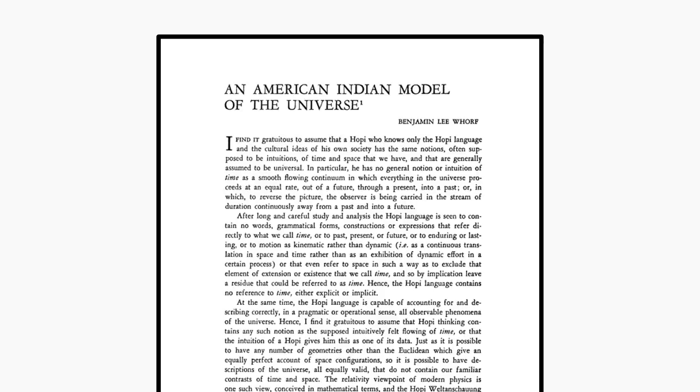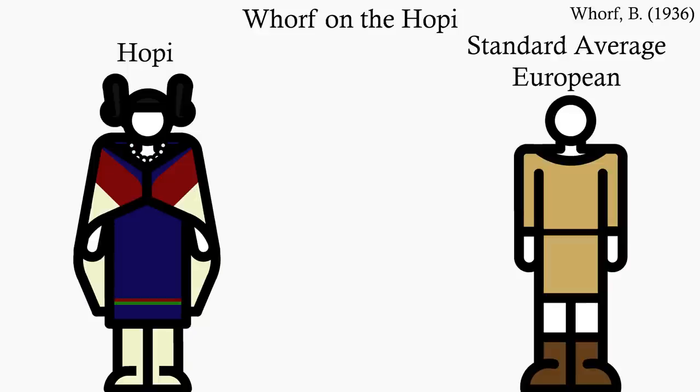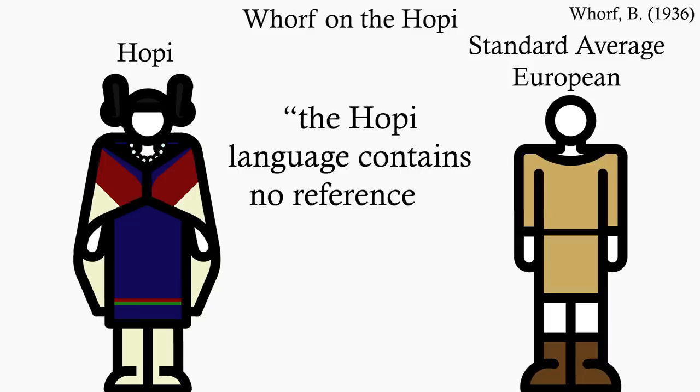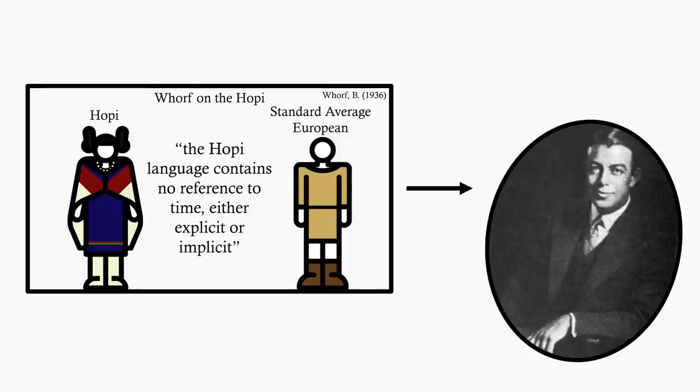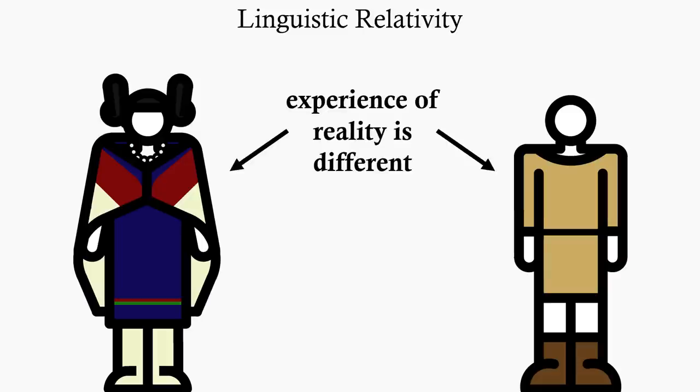It's kind of difficult to pick out what he does claim, actually. Whorf is kind of a bad writer. But he does clearly believe that the Hopi experienced time in a fundamentally different way than the speaker of the standard average European language. And he claims that the Hopi language contains no reference to time, either explicit or implicit. This was the basis of his theory of linguistic relativity, where from an individual's perspective, the world is different based on the language they are experiencing it in.